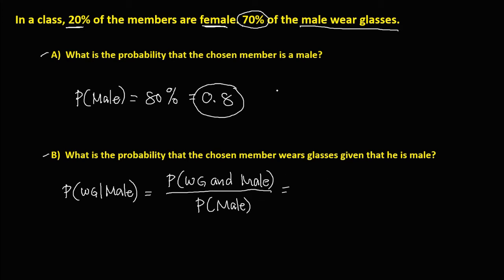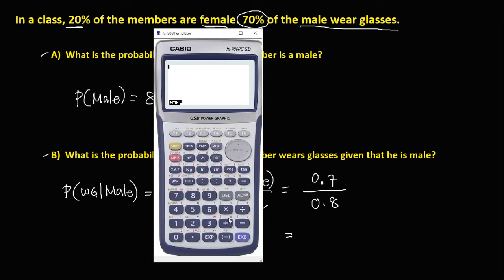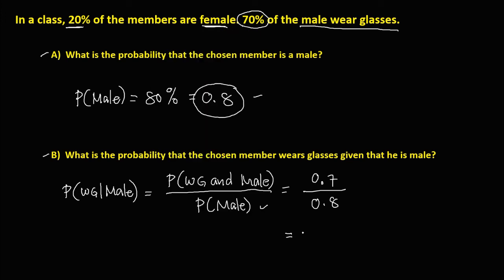So therefore, in decimal, that's 0.7 over the probability of male, that's 0.8. To solve for the probability, we have 0.7 divided by 0.8. So the probability is 0.875.